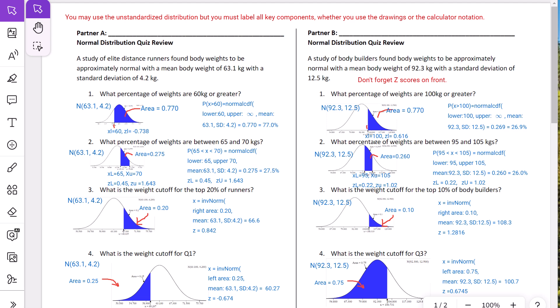You may use the unstandardized distribution. In other words, you don't have to use Z-scores. You're welcome to use Z-scores. They do take longer. If you use the unstandardized version, which means you're actually using the mean and the standard deviation for the problem, make sure you label everything. You must label all key components like your lower, your upper, your mean, your standard deviations.